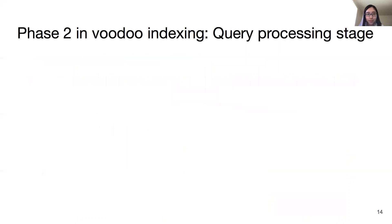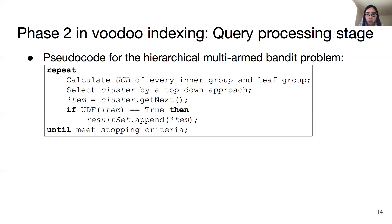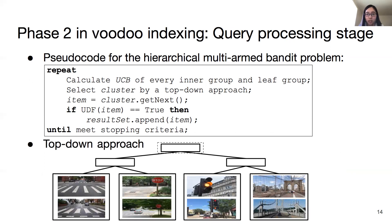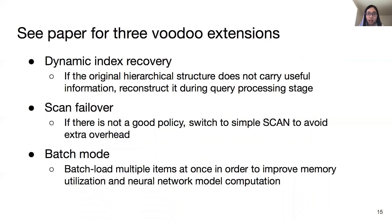Similar groups can share sampling information through higher-layer groups. In order to utilize the hierarchical structure, we face a hierarchical multi-armed bandit problem, so we design a new algorithm. The main difference from the previous UCB algorithm lies in the first two lines of the loop: calculate the UCB of every inner group and leaf group, and select the cluster by a top-down approach. The top-down approach starts from the root, compares the UCB of its children, selects the highest one, and repeats until reaching the bottom.